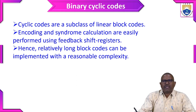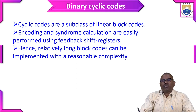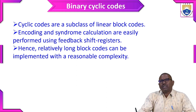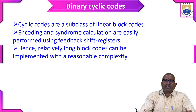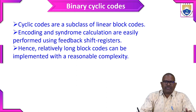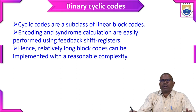Hence, relatively long block codes can be implemented with reasonable complexity. Block codes and cyclic codes are nearly equivalent. The difference is that in block codes we generate the code as a block, whereas in cyclic codes we generate the code as a polynomial structure — that is, 1 plus x plus x squared plus x cubed, and so on.